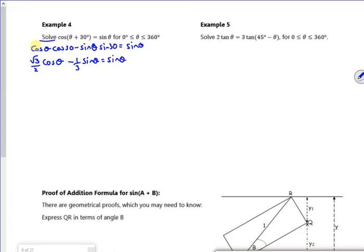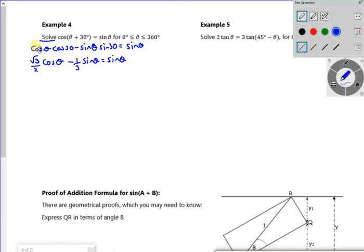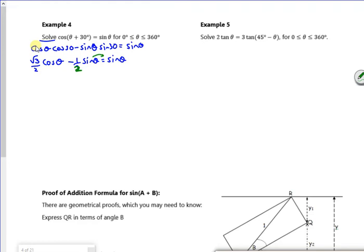I want to try and make it as easy as I can to solve it. So if I take the half over there, take care of the next bit, then I've got root 3 over 2 cos theta is equal to one and a half lots of sin theta.